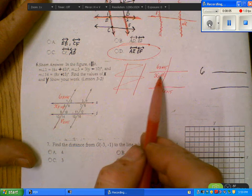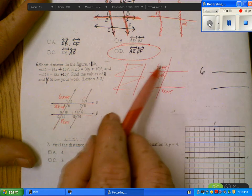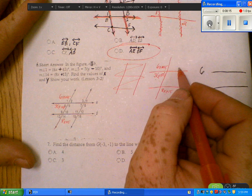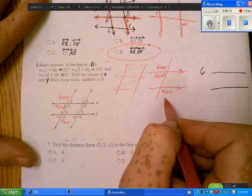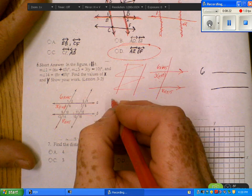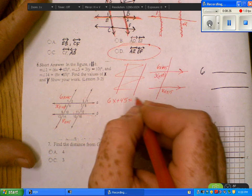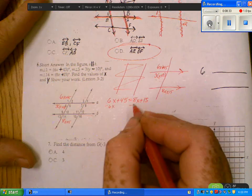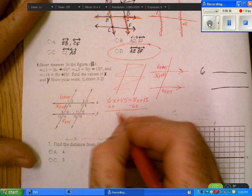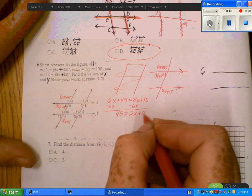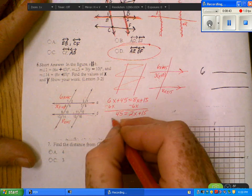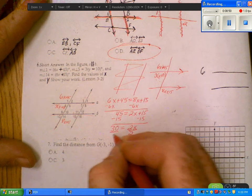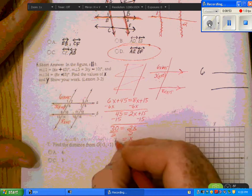These two together would be 180, but one has an X in it, one has a Y in it, so I don't want to set up that equation. These two are alternate exterior angles and they have to be equal to each other. 6X plus 45 equals 8X plus 15. Get all the X's on one side. 45 equals 2X plus 15. Subtract 15 from both sides. 30 equals 2X. X equals 15. So that's part of your answer.